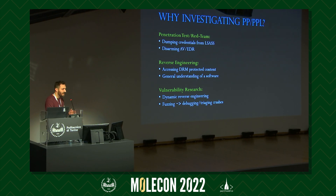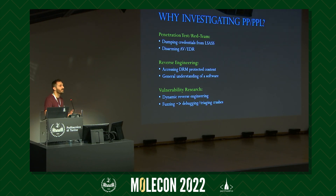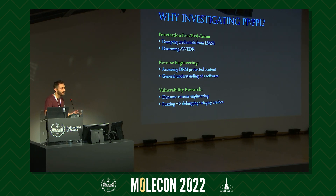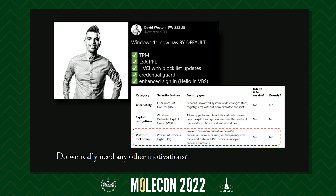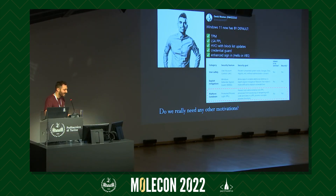The second area is reverse engineering, because protected processes are also used to shield DRM-protected content, so we can investigate the main target and dump DRM-protected content out of it. The third area is vulnerability research — if we can instrument and debug protected processes, we can fast-triage crashes with the end goal of finding vulnerabilities. And the fourth area is, of course, the Microsoft security team. The more they make Windows secure, the more we can brag about finding a bypass in their mitigations.